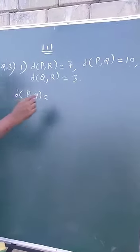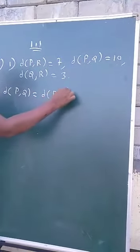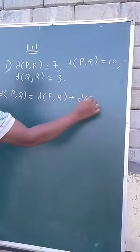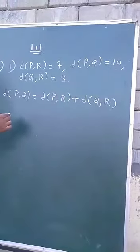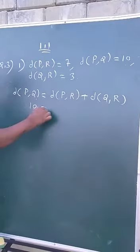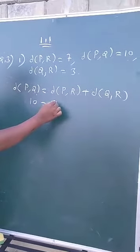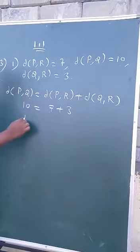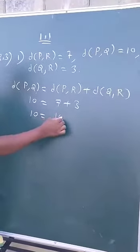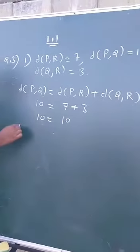meaning distance PQ equals distance PR plus distance QR. PQ is 10, PR is 7, QR is 3, and this sum 7 plus 3 equals 10. Both are equal.